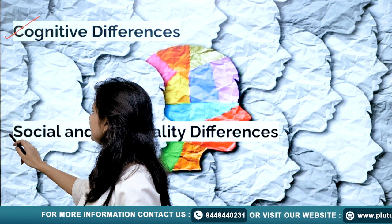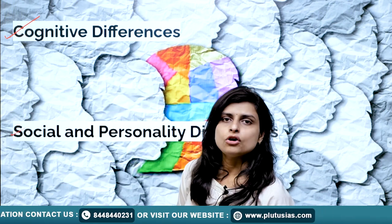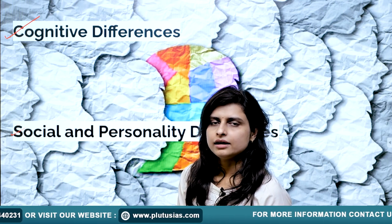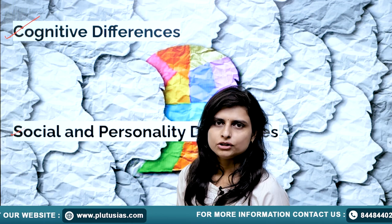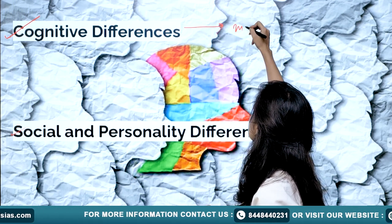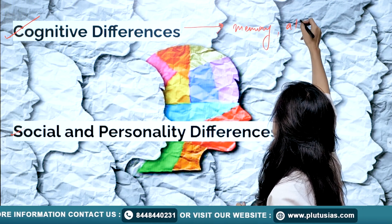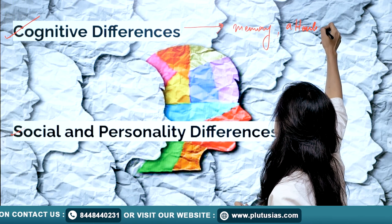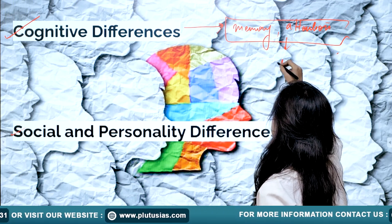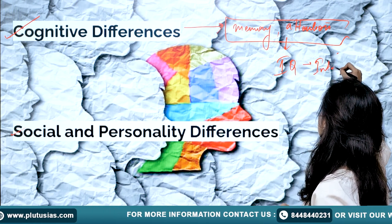Psychology says there are two major factors based on which we can say that both men and women are operating differently. The first is cognitive difference — the difference in the ability of both genders to pay attention to certain things, how to use memory, and in short, it is about IQ, that means your intelligence quotient.